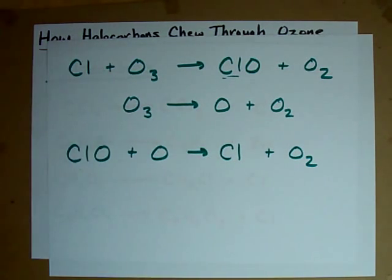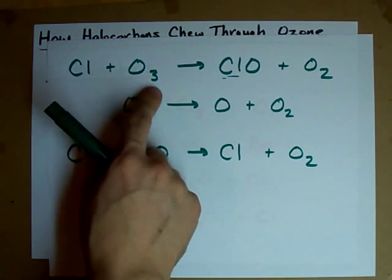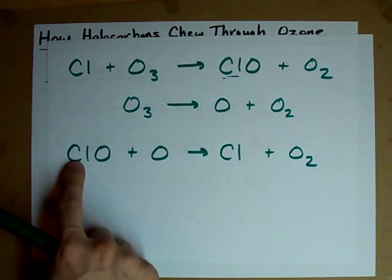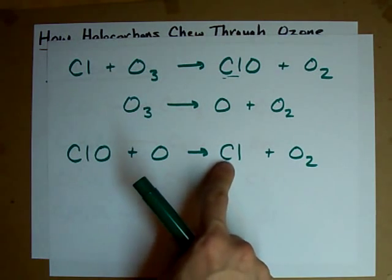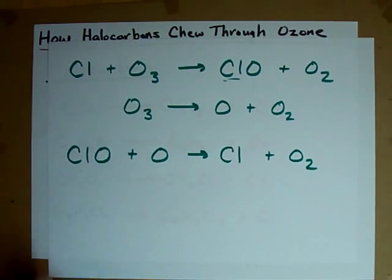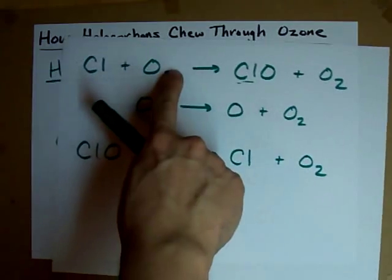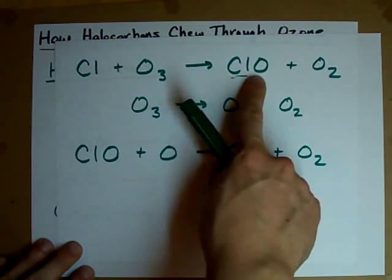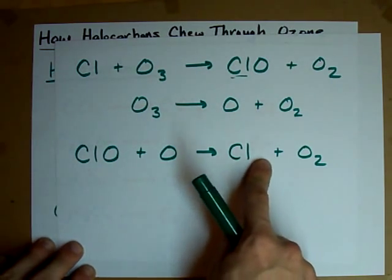Now, take a look at what's happening here. Chlorine destroys an ozone to make ClO. And in the end, ClO regenerates the Cl. So, chew up an ozone, chlorine regenerates itself. Chew up an ozone molecule, chlorine regenerates itself.